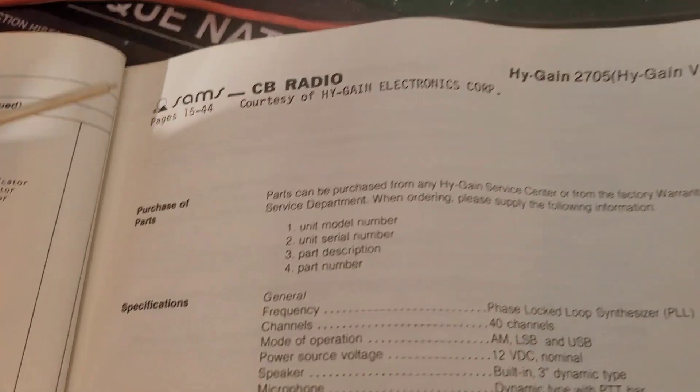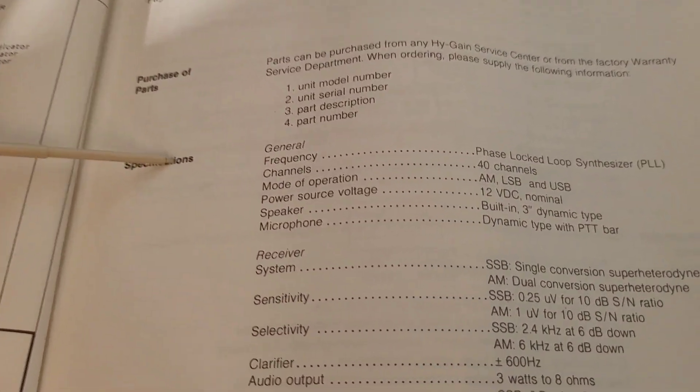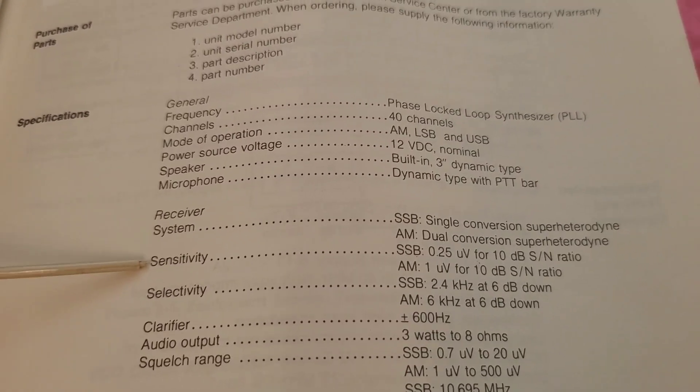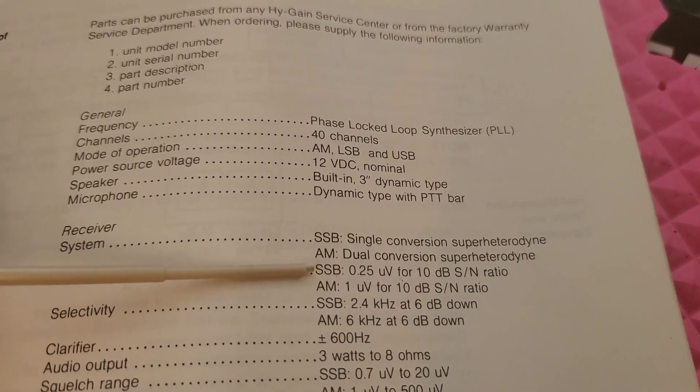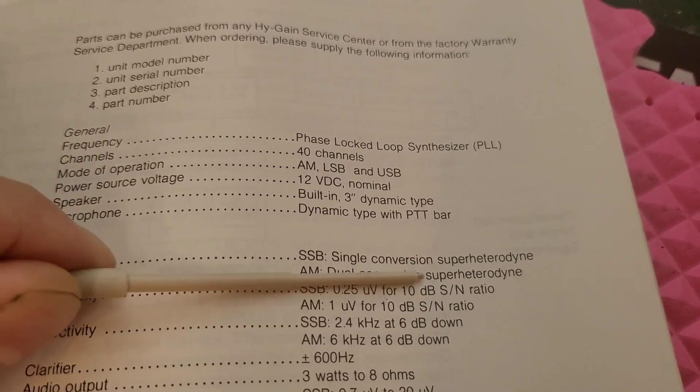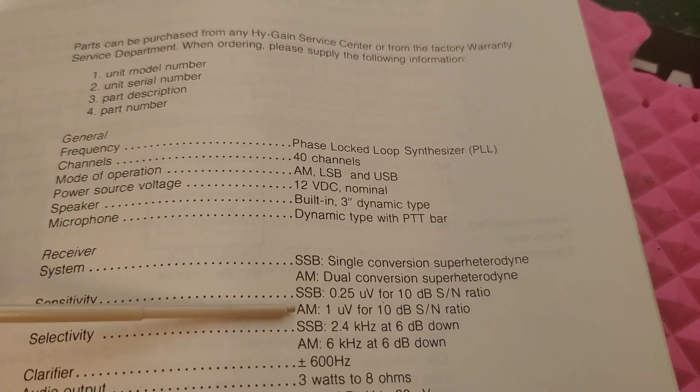When you look at this High Gain and go into the Sam's manual and the specifications and go down to sensitivity, you can see here on sidebands it gives you the signal to noise ratio, and on AM it gives you the signal to noise ratio.